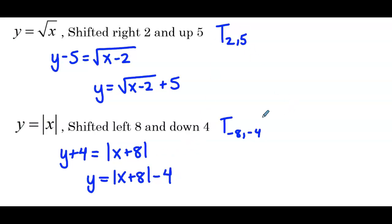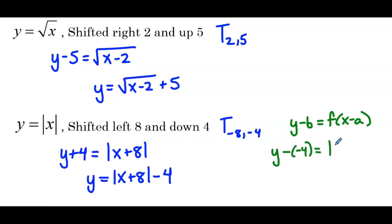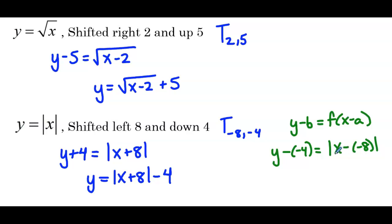For all of these examples, if we understand that it's always y minus b and x minus a, we could have approached the previous example as y minus negative 4 equals the absolute value of x minus negative 8, and then simplified to get the same equation. But I'd rather place the emphasis on the idea that the equation always describes the opposite transformation, because it's telling us how to get from the translated graph back to the parent function, whereas the translation tells us how to get from the parent function to the graph.